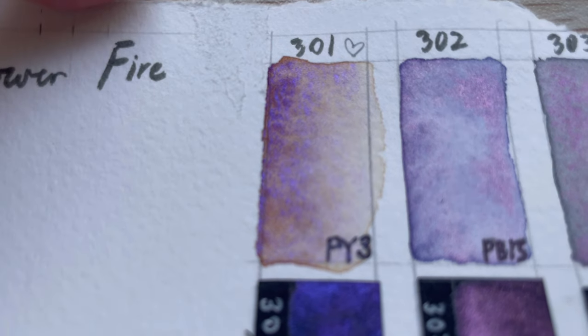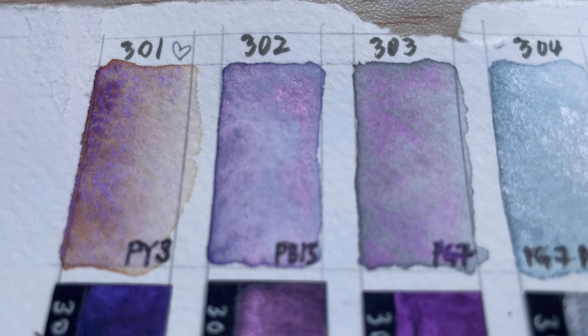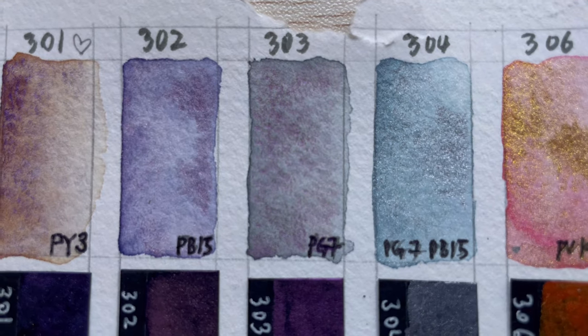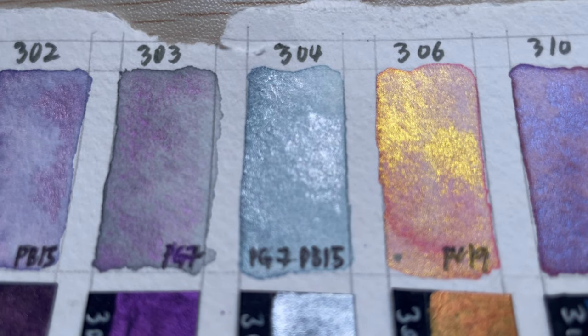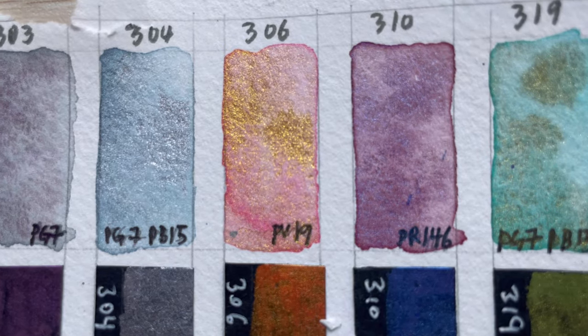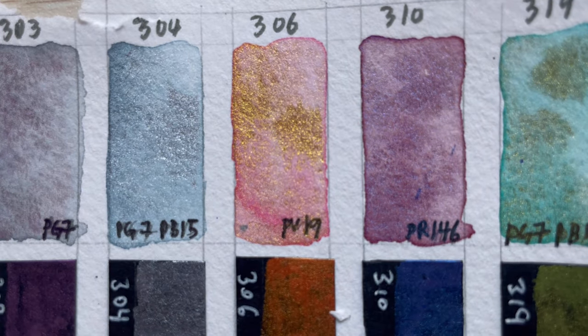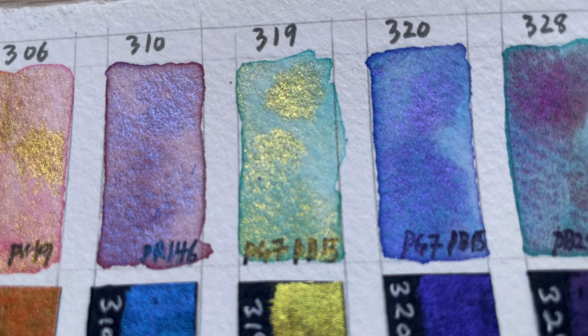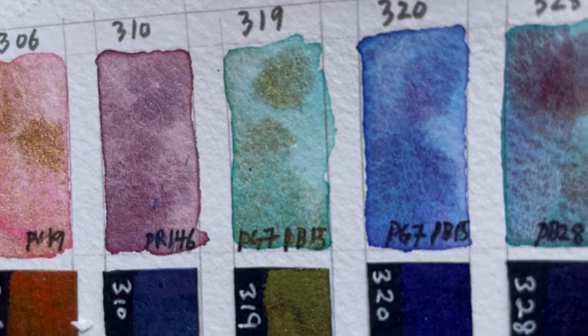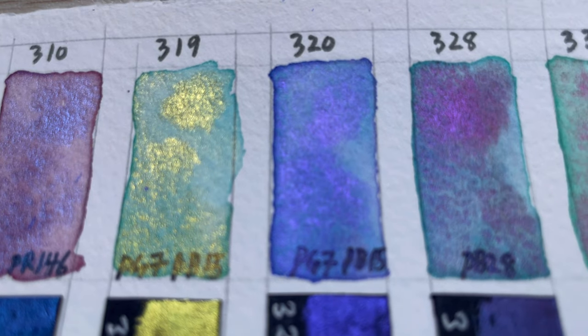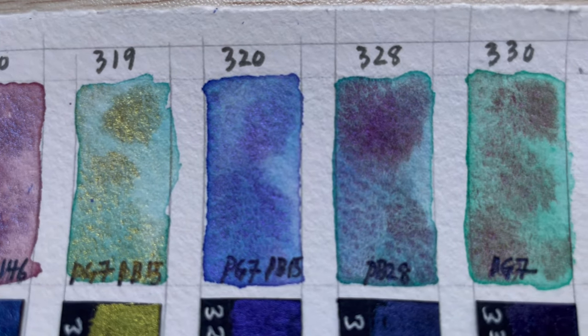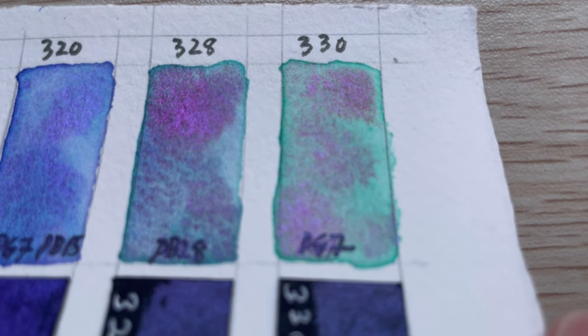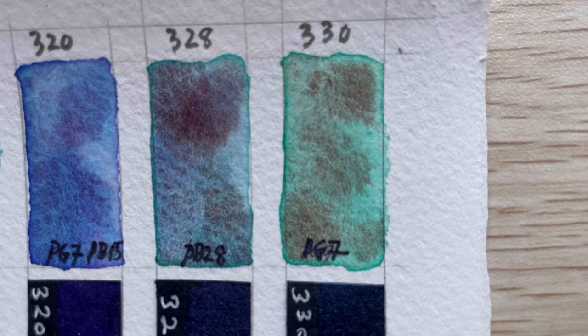And here are the swatches for the set of colors from Flower Fire. I find this color very interesting because they do give you different looks depending on how you move the paper, and that gives you a lot of texture and ways to make it interesting. So what's your favorite color? Let me know in the comment section. I will review the other sets in the upcoming videos. I hope you've enjoyed this video. If you did, give me a thumbs up and subscribe if you'd like to see similar content. See you in the next one. Bye bye!